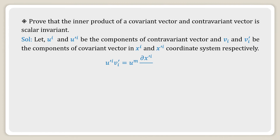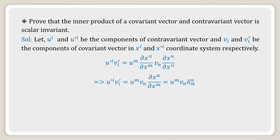Now u'^i times v'_i can be written using the transformation law as u^m times (del x'^i / del x^m) times v_n times (del x^n / del x'^i). Now del x'^i will get cancelled, and in the next line we get u^m v_n times (del x^n / del x^m). Again, (del x^n / del x^m) can be written as the Kronecker delta delta^n_m. Multiplying v_n with delta^n_m gives u'^i times v'_i equals u^m times v_m, which is a scalar quantity.